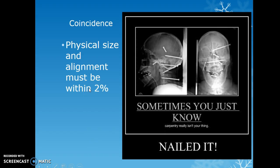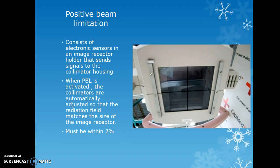Coincidence means the physical size and alignment of the light field must be within 2%. What you visually see on the table should match your output on the final image. Positive beam limitation uses electronic sensors in the upright bucky and table bucky to detect the cassette size and send a signal to the collimator housing to automatically close the shutters to that field size. This must also be within 2%.